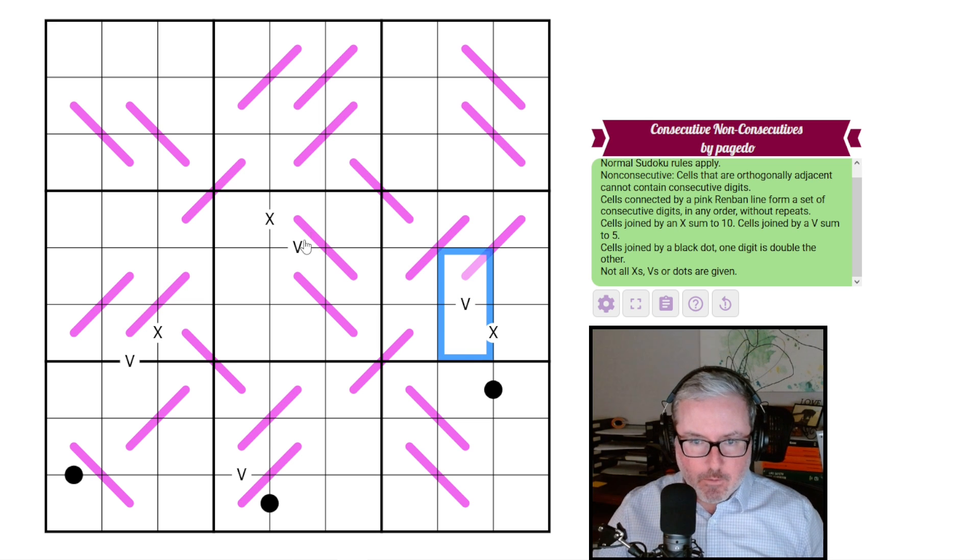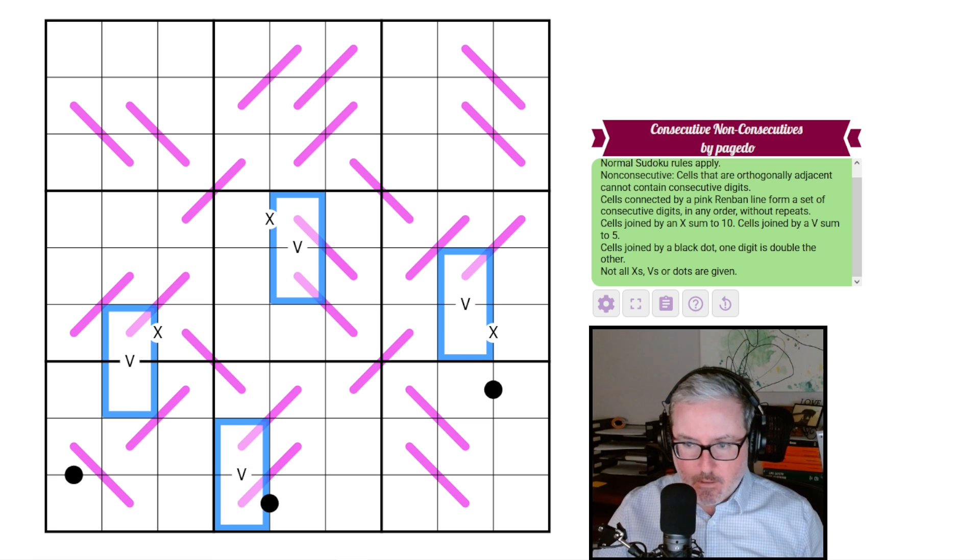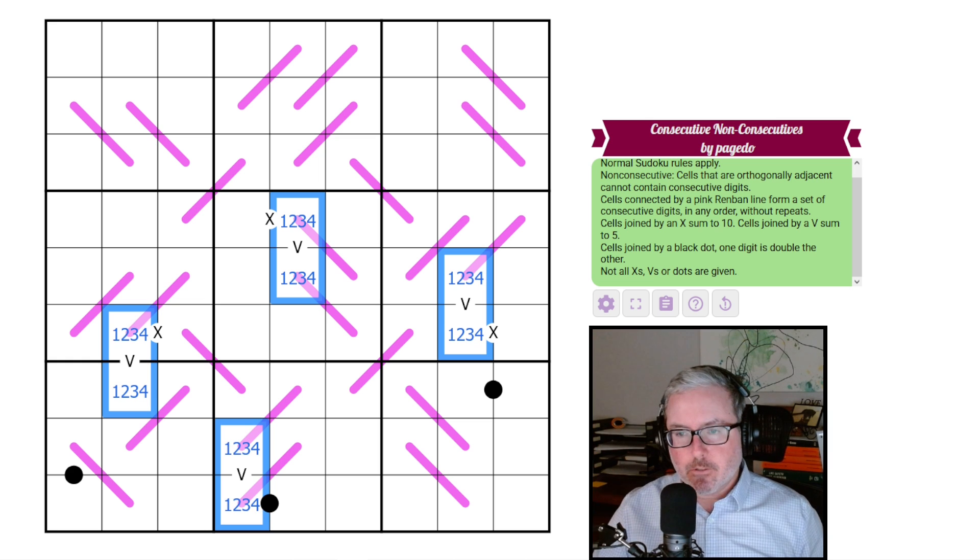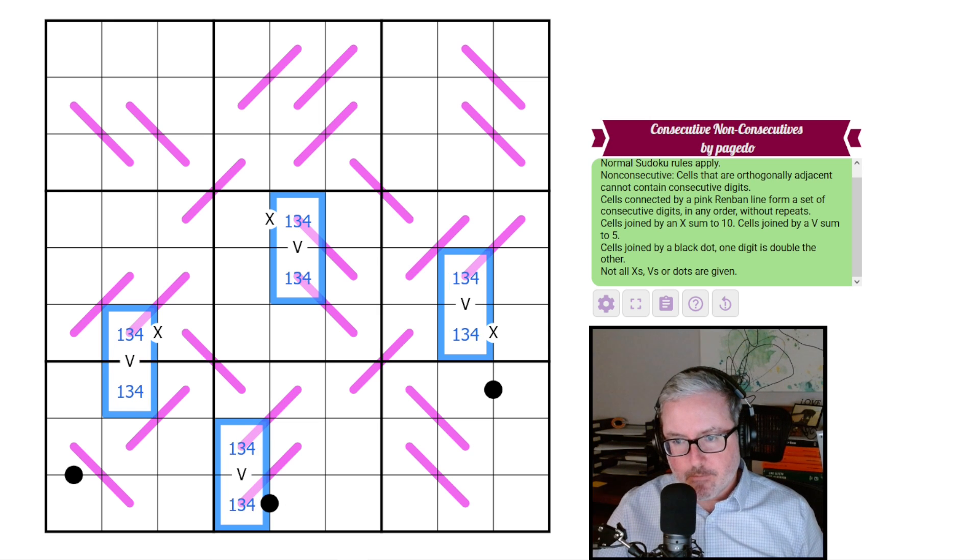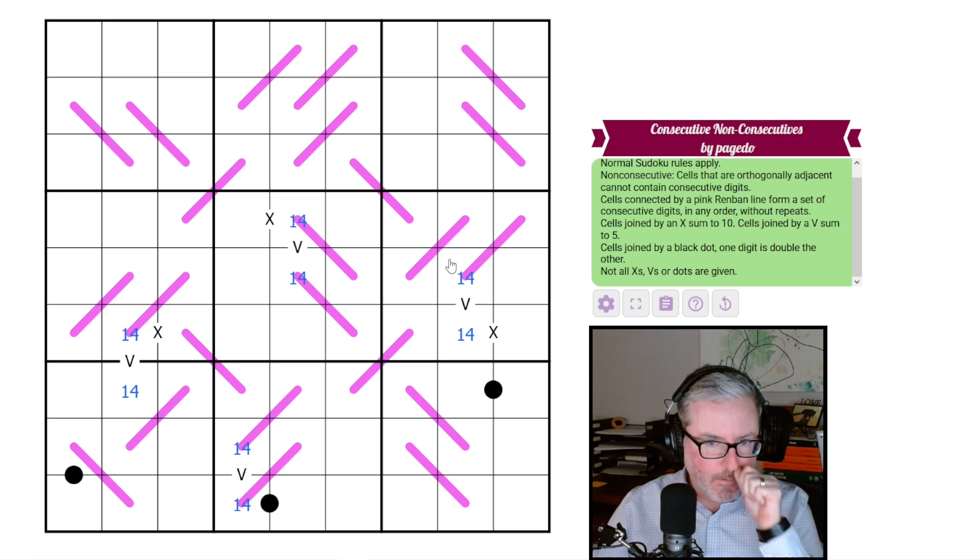All right, we're going to start with our Vs, our normal intro to V puzzling, because they can only be 1, 4, or 2, 3. Oh, well, that's obvious. These can't be consecutive digits because they are orthogonally adjacent. Therefore, is it working? Yeah, it works for all of them. These are not 2, 3s. They're all 1, 4s. Cool.